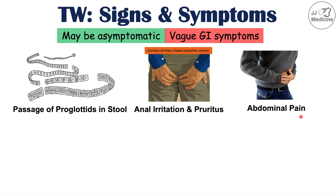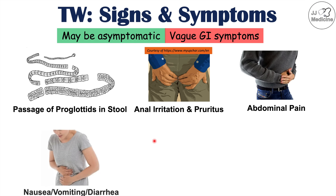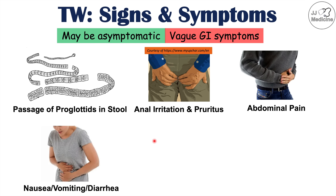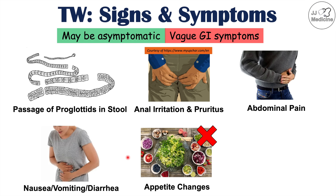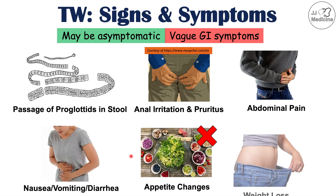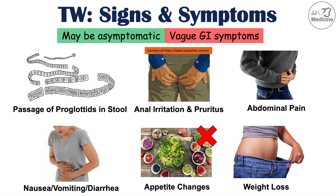Patients can also have abdominal pain, which is often worse in the morning and relieved with small amounts of food. Some patients may experience nausea, vomiting, and diarrhea, although this is more common in younger patients. Patients can also have appetite changes — either an increase or decrease in appetite — and weight loss, since tapeworms absorb nutrients and prevent the patient from getting them. Other signs and symptoms can include irritability and headache.